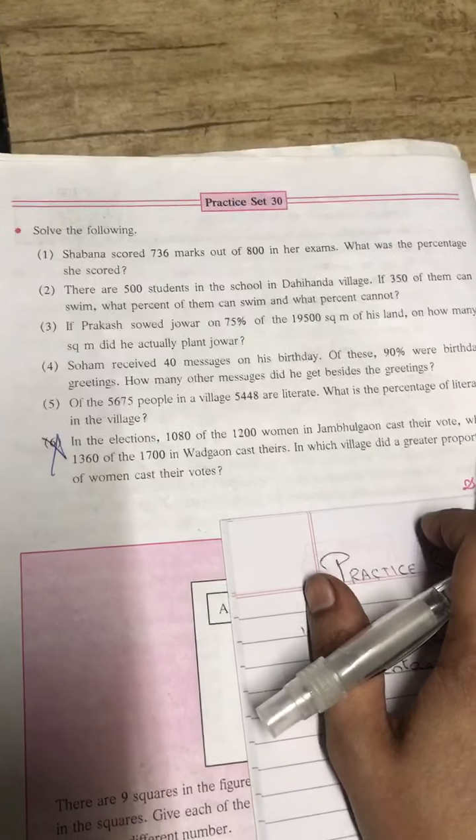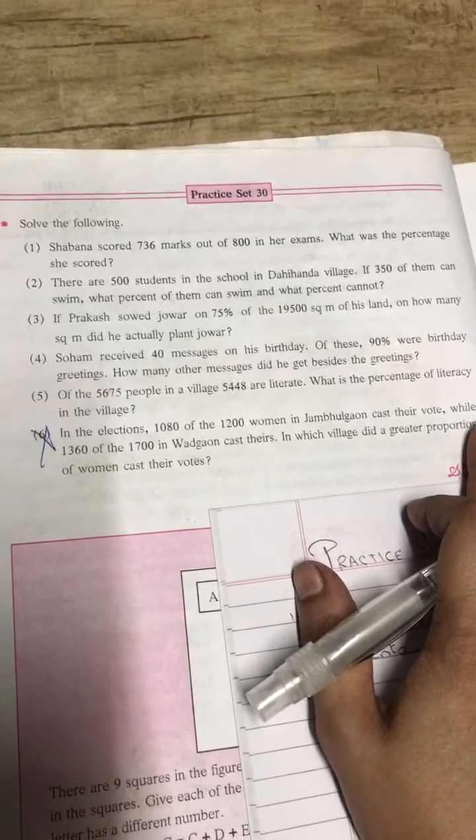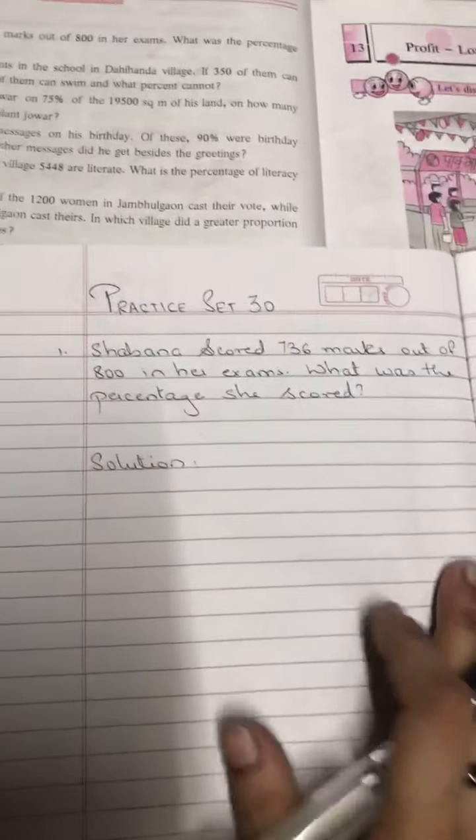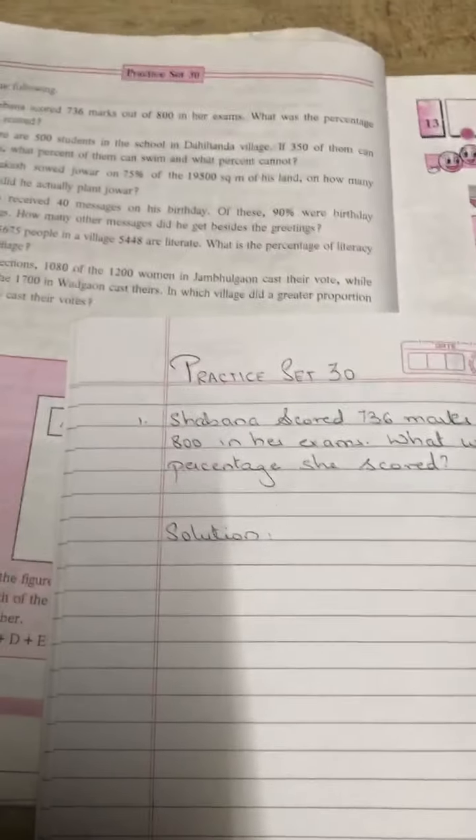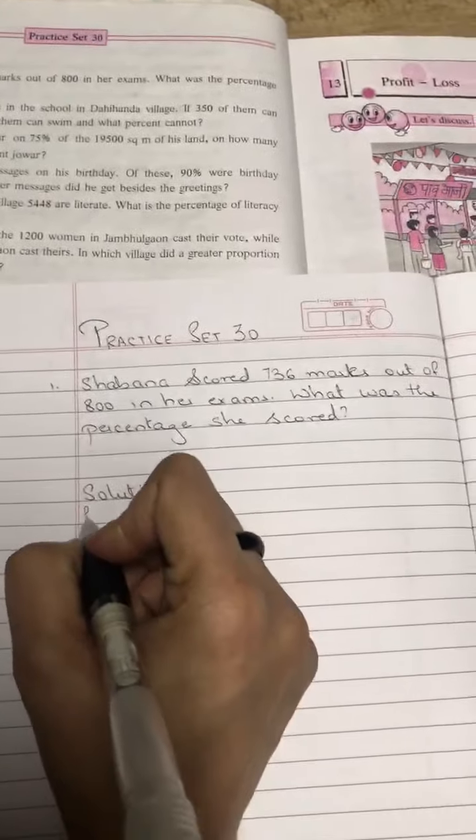The first sum is: solve the following. Shabana scored 736 marks out of 800 in her exam. What was the percentage she scored? Now first sum, see, solution we'll write.